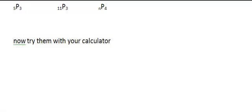The permutation of 5 objects taken 3 at a time: we enter 5 into the calculator, then Math, then Probability, and select 2 for NPR. So we have 5 NPR 3, press Enter, and we get 60.